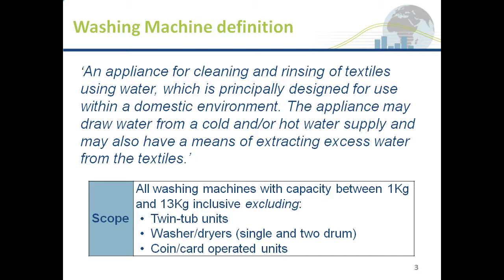What we excluded was twin tubs — units where the washing and spin happen in separate compartments — washer-dryer units where the drying is a tumble dryer, and coin-operated units. The reason for excluding those is they're not common products across all countries, so including them distorts comparability between countries. In terms of capacities, we followed the average across a number of standards around the world, including everything from 1 to 13 kilograms. Very few small products are available anywhere anymore — anything up to 3 or 4 kilograms has largely disappeared from most markets.